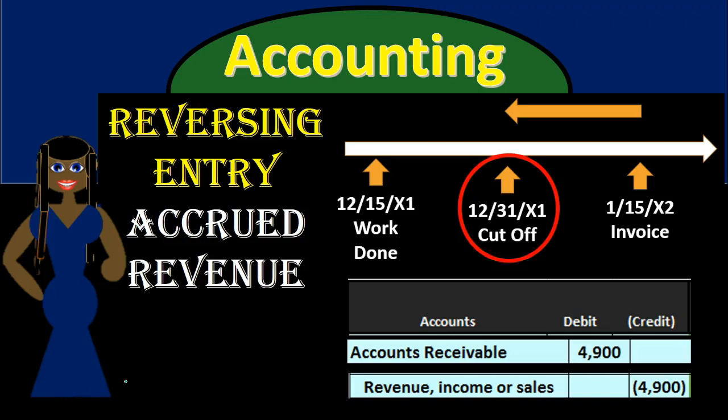In this presentation we're going to talk about reversing journal entries as they are related to accrued revenue. When considering reversing journal entries, we're talking about those journal entries made after the financial statements have been generated, after the adjusting process has been done. The adjusting process happens after all the normal transactions for the month have happened, with all adjusting journal entries made as of the end of the month so that the financial statements are correct as of that point in time.